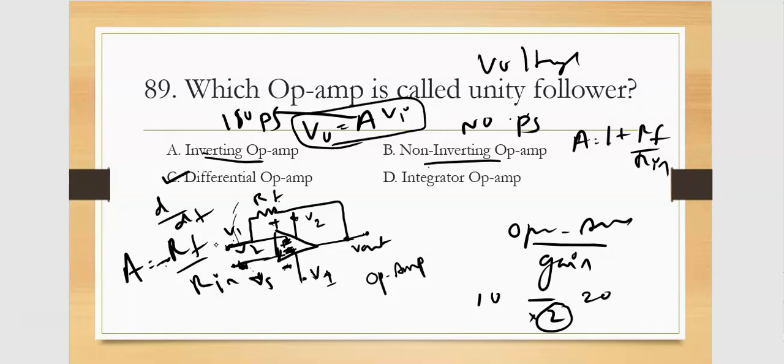Differential op-amp: input voltage is differentiated, rate of change of input voltage. Integrator: integration of voltage. When Rf is 1, gain equals 1. In such case we call it unity follower or voltage follower. So inverting amplifier will be the right answer.